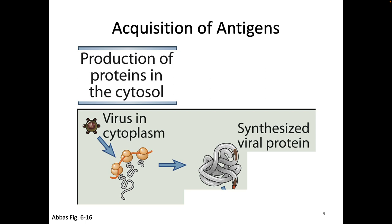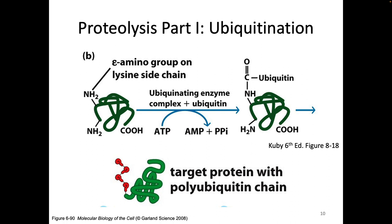The next thing we need to do is tag that protein to be destroyed — set up a situation where that protein is going to be destroyed. In the cell, there are two different ways things can get destroyed: one is if it's in the cytoplasm, and the other is if it's in the vesicular transport pathway. This is really the general way we get rid of things that are in the cytoplasm.